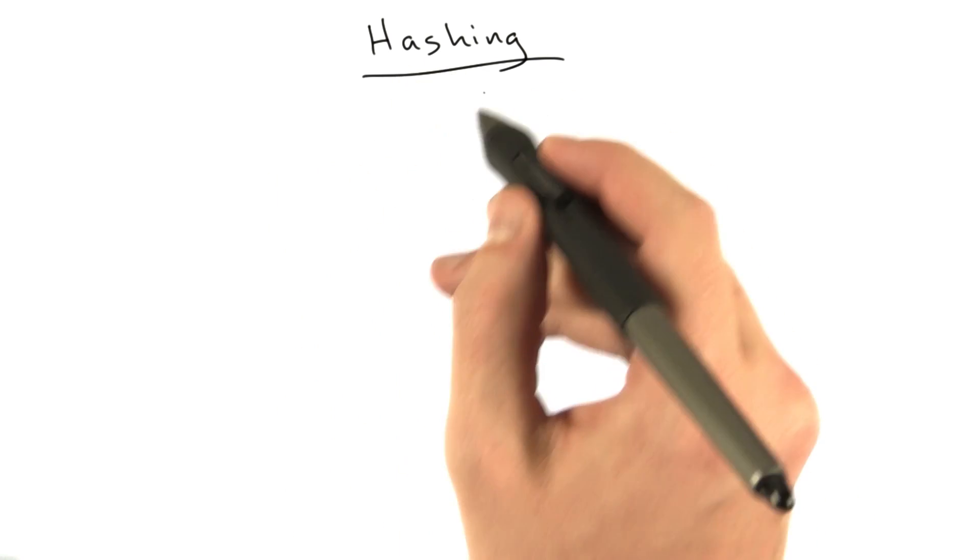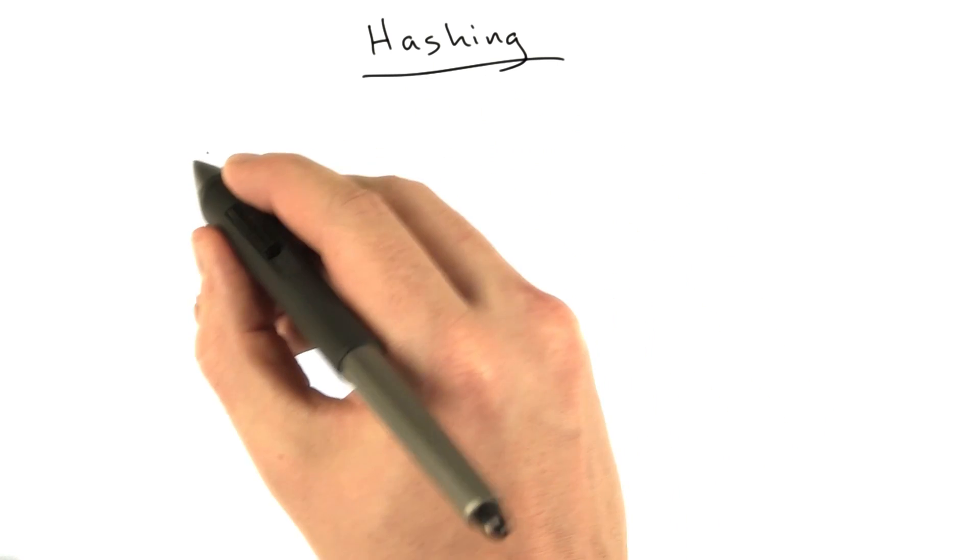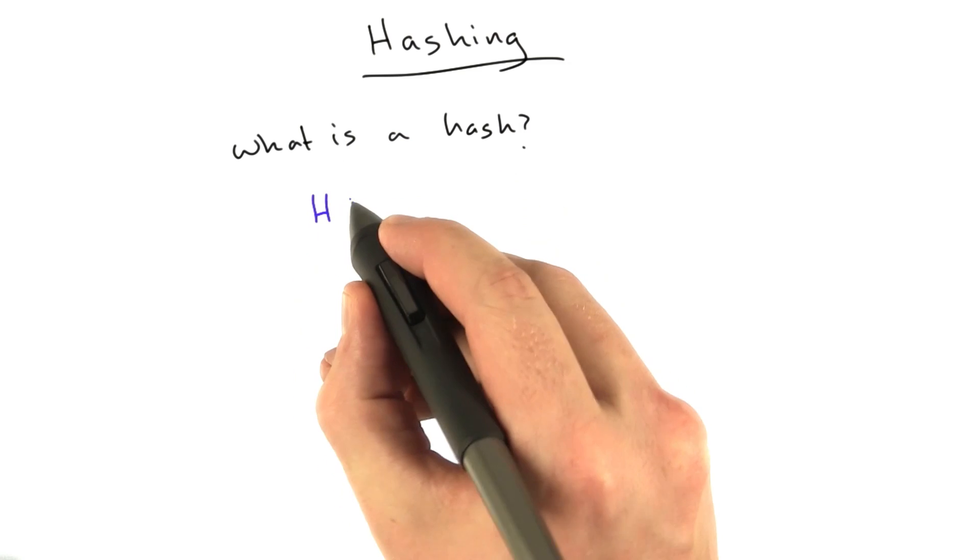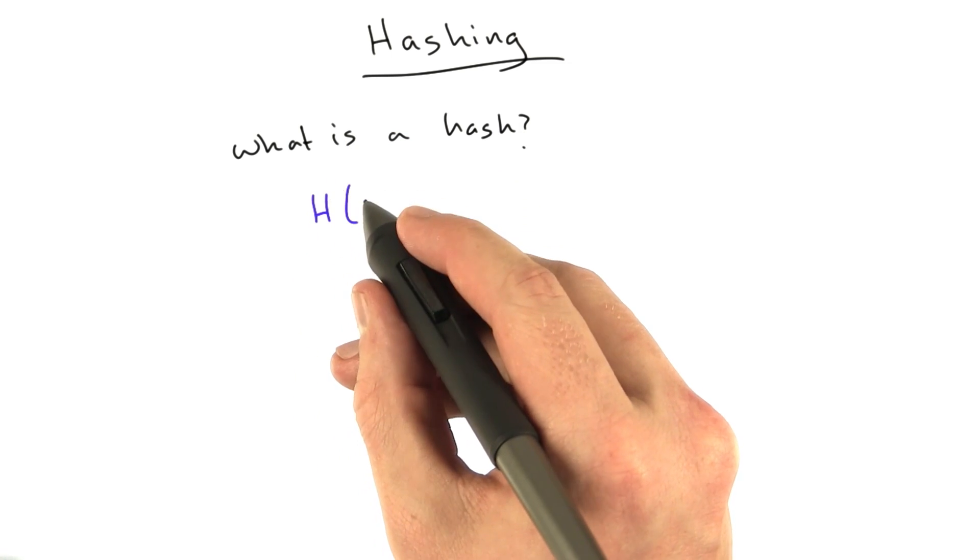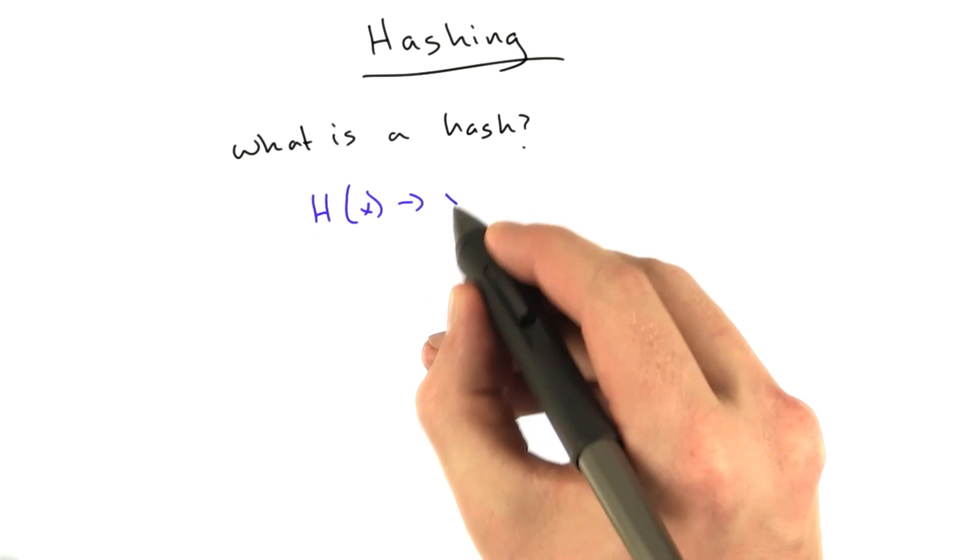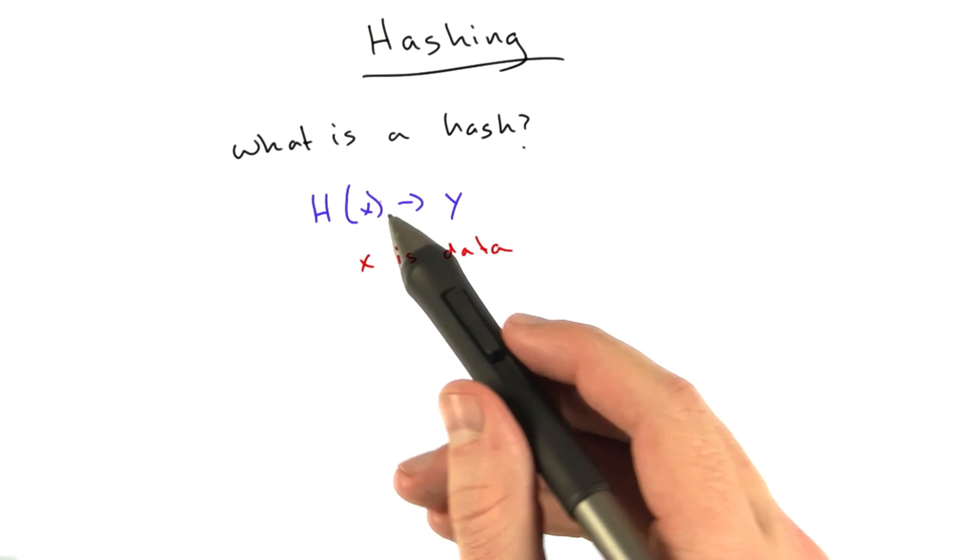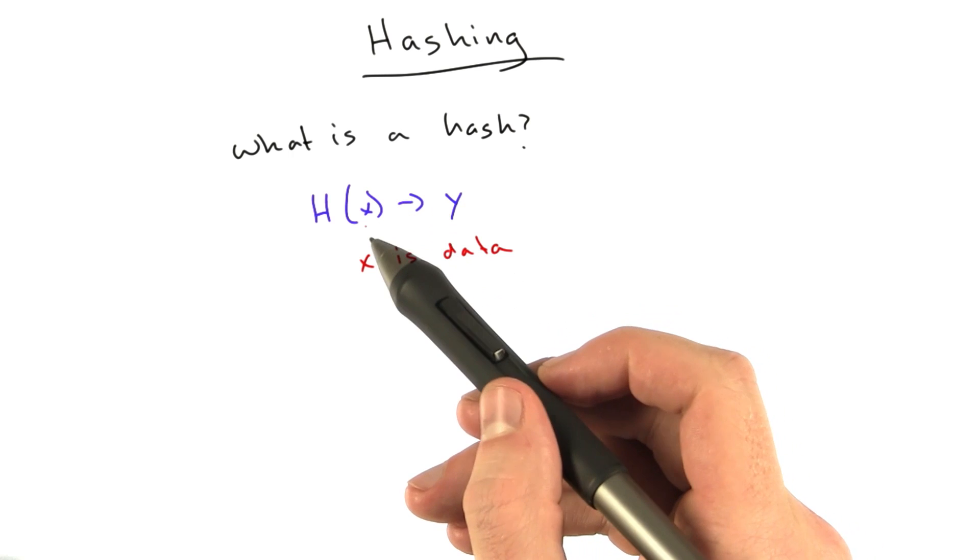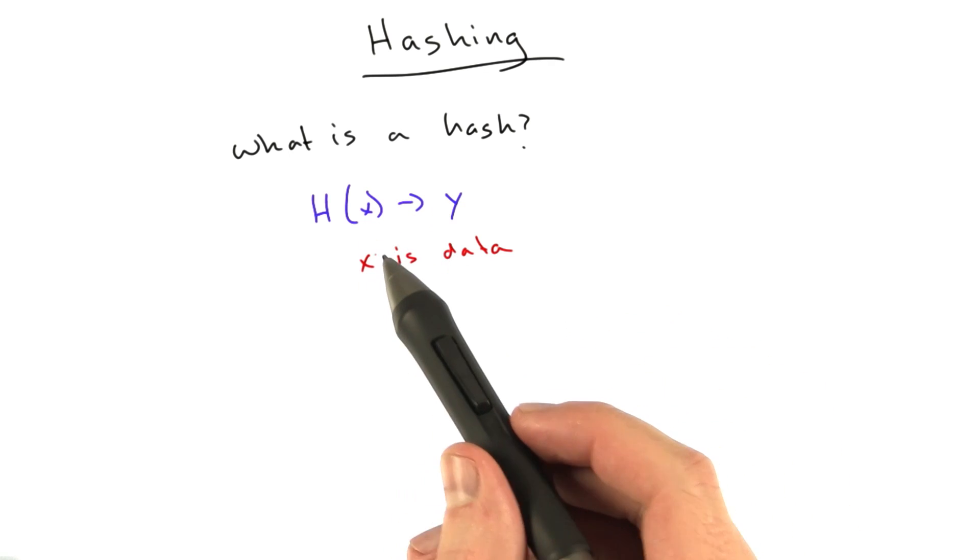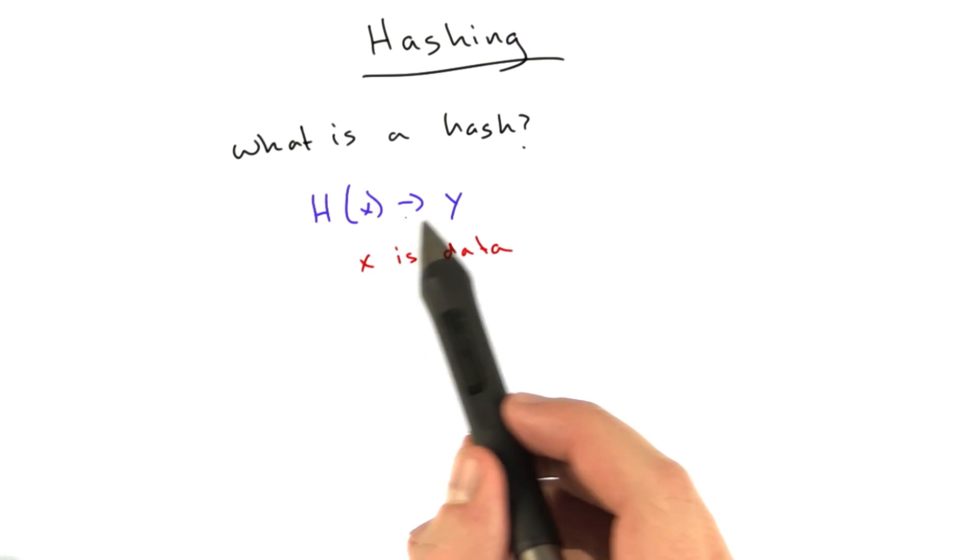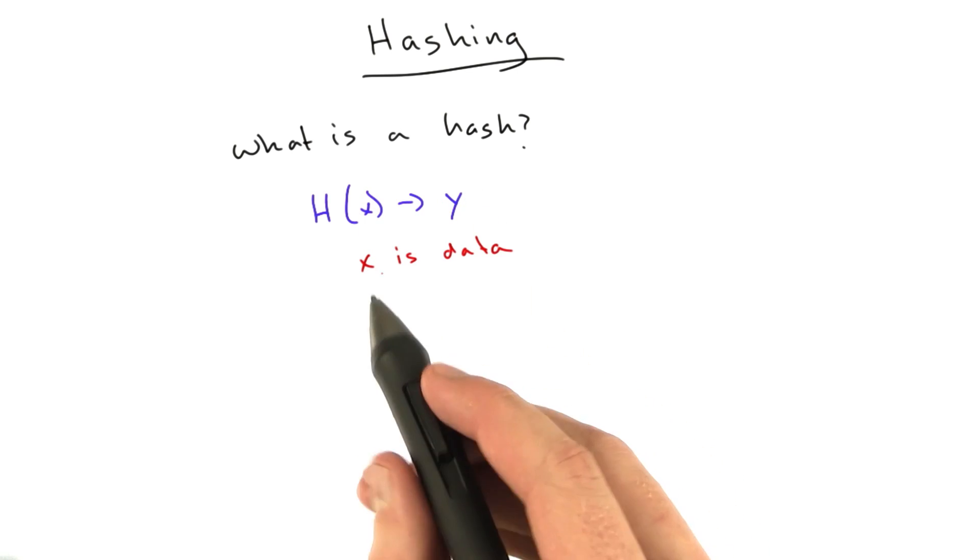So what is hashing? What is a hash? Basically a hash is a function, let's call it h, that when you apply this function to some data, you get y. So we'll say x is some data, basically it's ultimately a number, how data is represented in the computer. Most of our functions will be dealing with string, and it returns this value y.